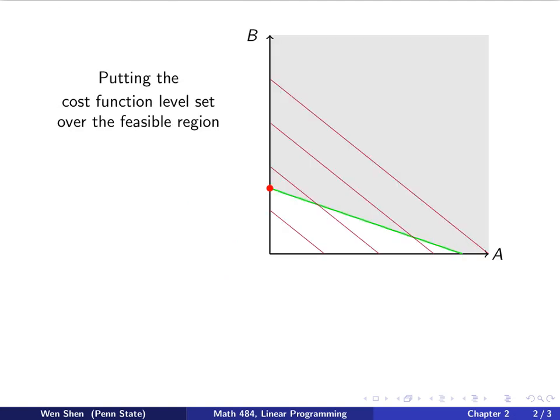Now it's time to put the cost function level set over the feasible region, which is represented here on this graph. The gray area is the feasible region. Every point in this region satisfies all the constraints. And these lines in purple, along all these lines the cost function is a constant.